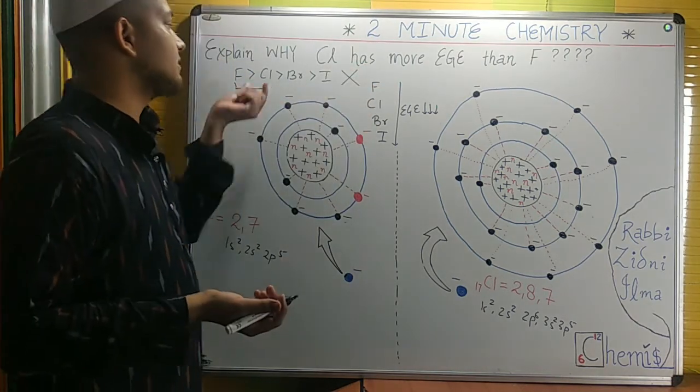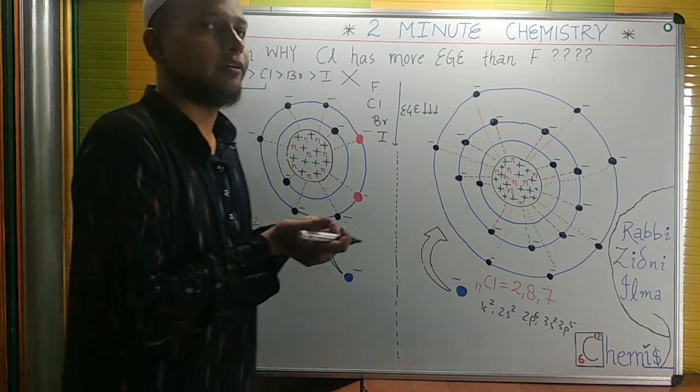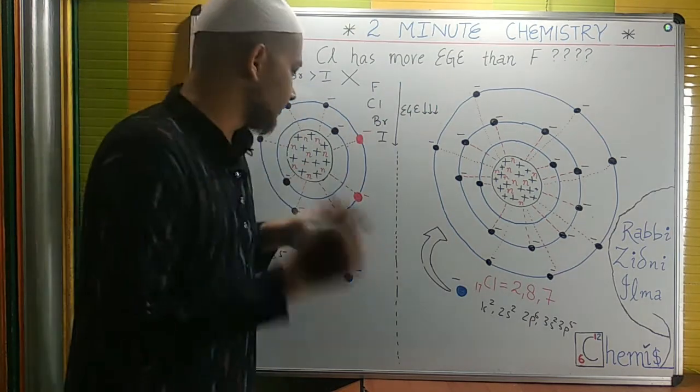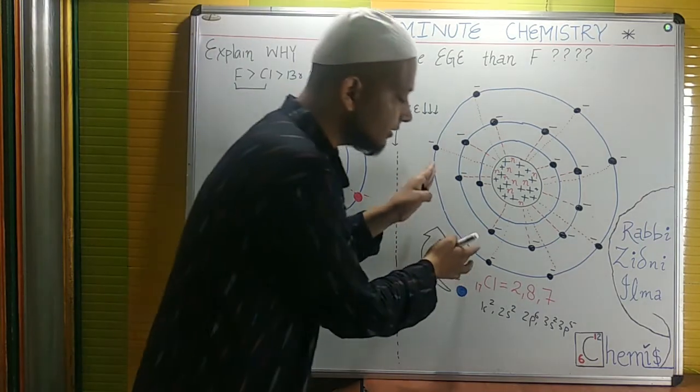So what is the cause that chlorine has a higher value of electron gain enthalpy in comparison to fluorine? Consider this fluorine and consider this chlorine.